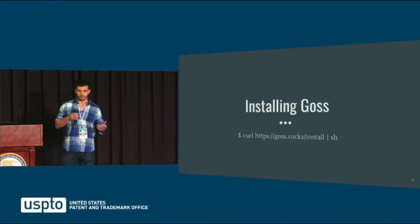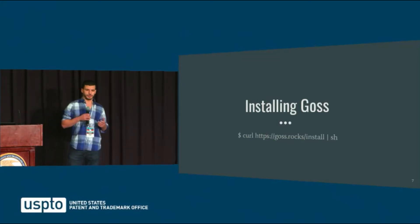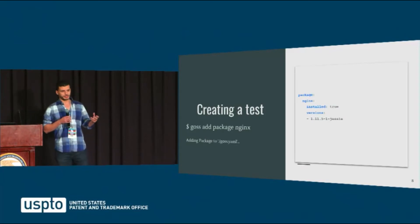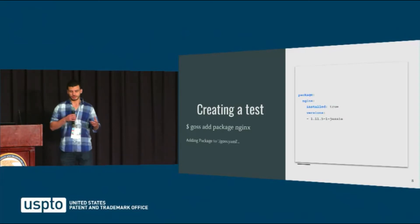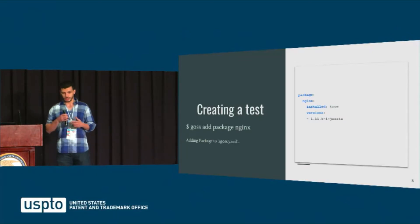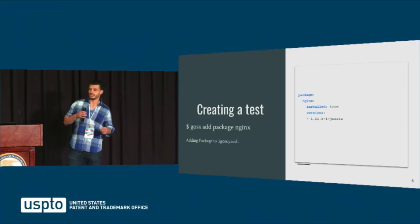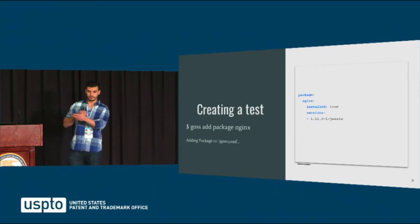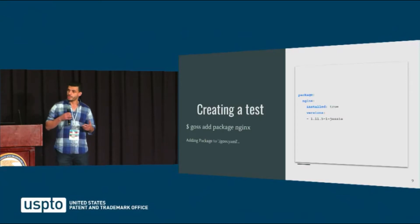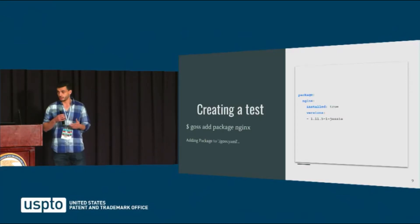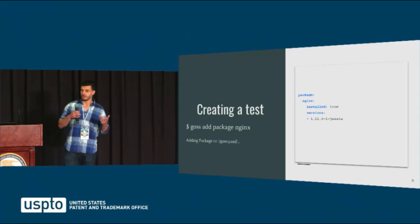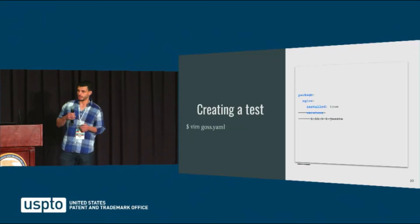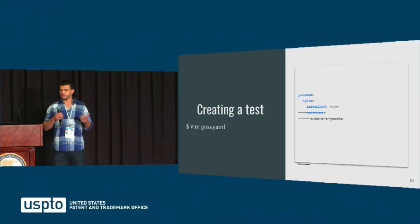Once you install GOSS, you're ready to write your first test. GOSS takes a slightly different approach to writing tests in that if you can test a system state, then you can also derive that system state. So you can do something like goss add package nginx, and it spits out your YAML test file that says, hey, I want Nginx to be installed and I want it to be this version. You can write that test file from scratch yourself, but GOSS gives you that helper to generate it quicker. Once you do goss add package nginx, you can go in with an editor and say, I don't really care that version 1.11 is installed — I just care that Nginx is installed.